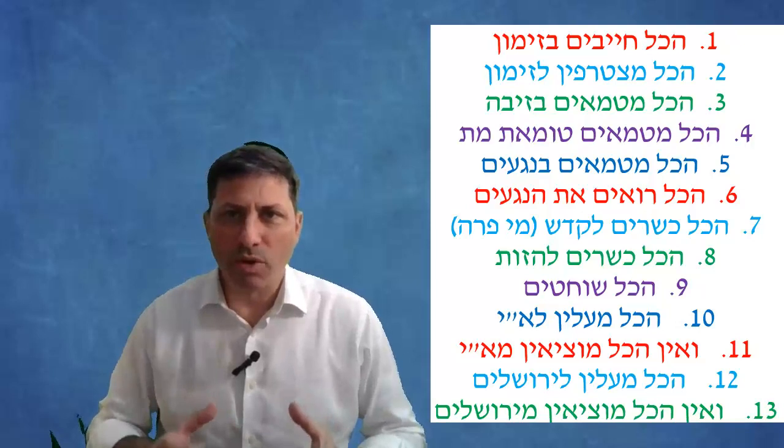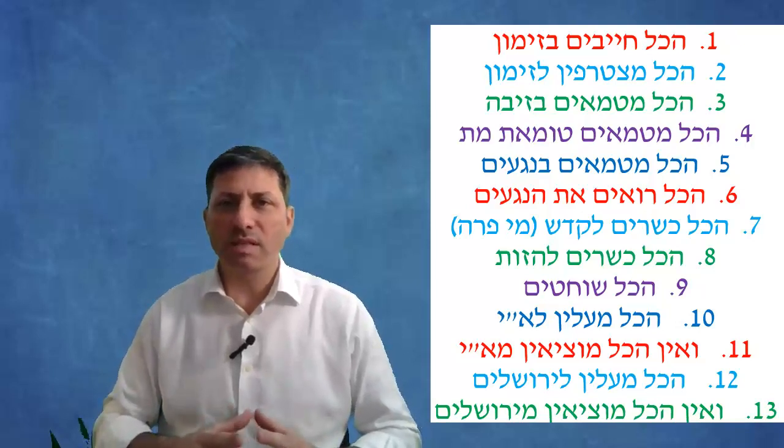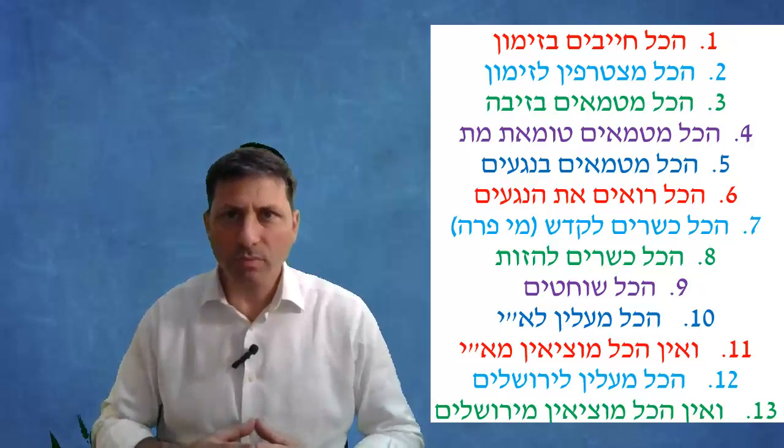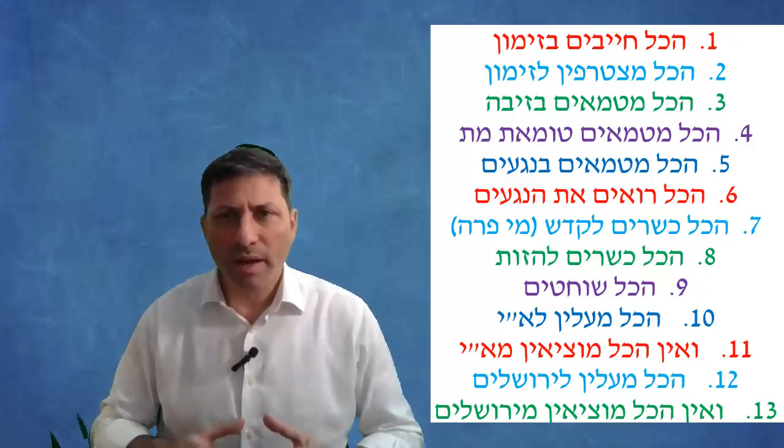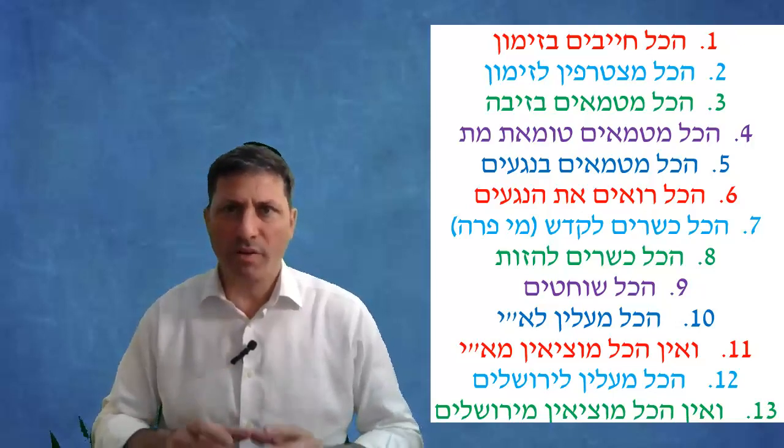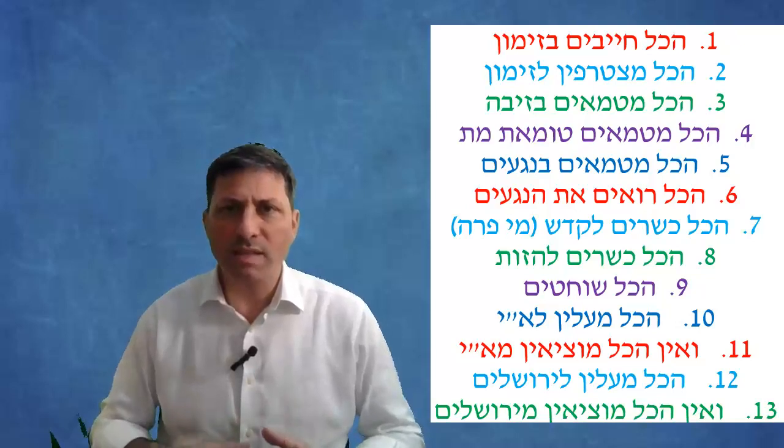You take three people you make zimun - everybody's chayav b'zimun. Says the Gemara comes to include women and slaves, they are also chayav to make zimun when there are three women. Now if there are two men a woman is not mitzaref to the men, but if there are three women eating together they have a chayav b'zimun, Tajus says that it's a reshus in our days.